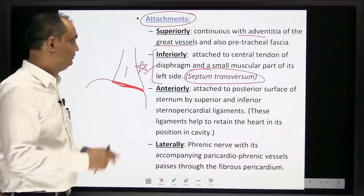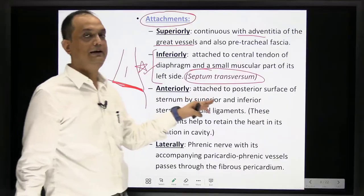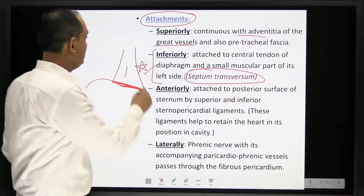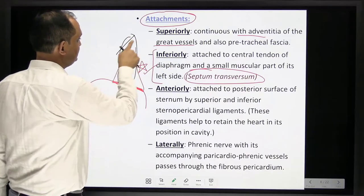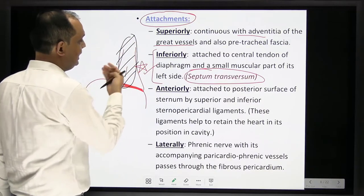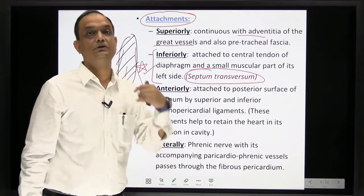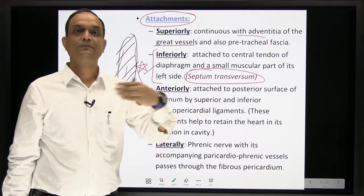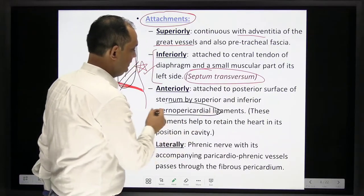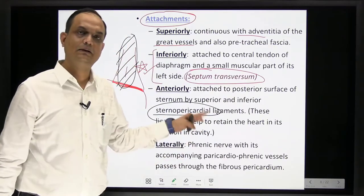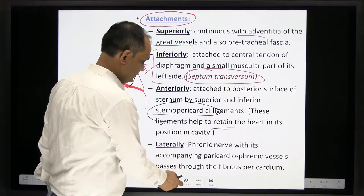To see the heart, you must cut the fibrous sac. Anteriorly, the fibrous pericardium is connected to the sternum by a ligament known as the sternopericardial ligament, which provides support and keeps the heart in its correct position.